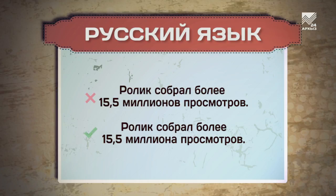Ролик собрал более 15,5 миллиона просмотров. Здесь всё достаточно просто. В дробных числительных дробь управляет существительным. Ставим его в родительном падеже единственного числа, так что будет «15,5 миллиона».